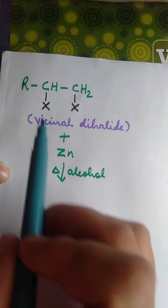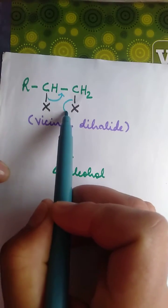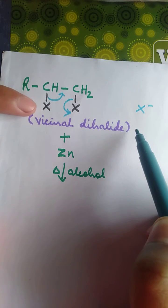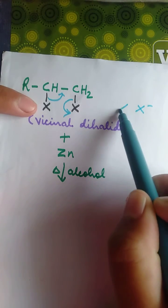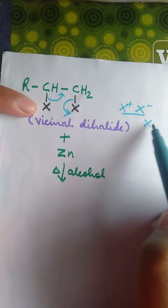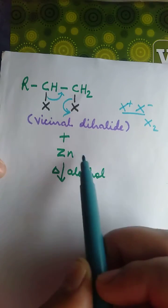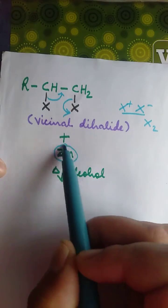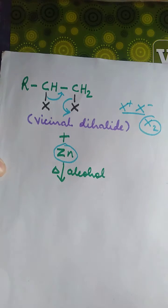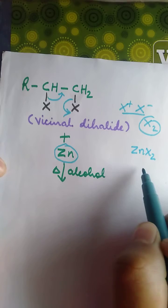So in this case, you will see that this one forms a double bond here. This one goes out as X minus and from here we have X plus. So these two, we get X2. And then this one combines with this to give ZnX2.